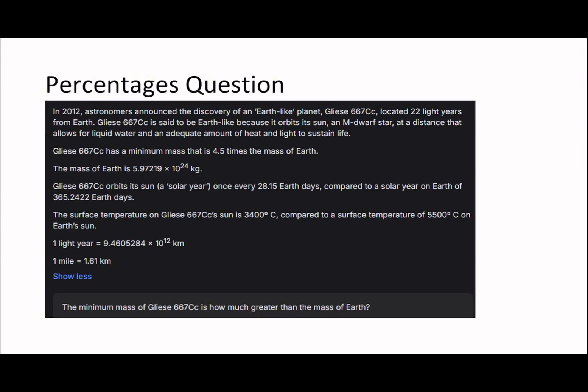Okay, so I hope that makes sense. So let's go on to the next question then. So the minimum mass of Gliese 667 CC is how much greater than the mass of Earth? Okay, so we want to look at minimum mass. So it says Gliese 667 CC has a minimum mass that's 4 times the mass of Earth. So if Earth is x, Gliese is 4.5x. Okay, so a lot of people here will just be tempted to put like 450, but remember what we have to use is our percentage change formula.